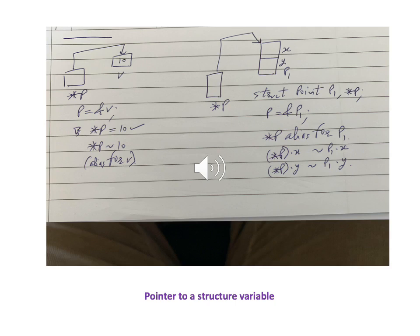Since v is an integer of four bytes, p now contains the starting memory location of v — in other words, p points to v. Using the pointer p, we can manipulate the variable v. If we write printf(*p) we get the value 10. The key concept is: if a pointer is pointing to a variable of the same data type, dereferencing the pointer lets us access and modify that variable's value. So *p is essentially an alias for v.